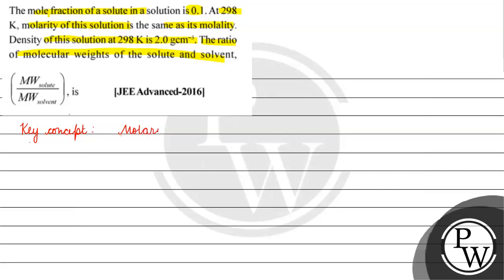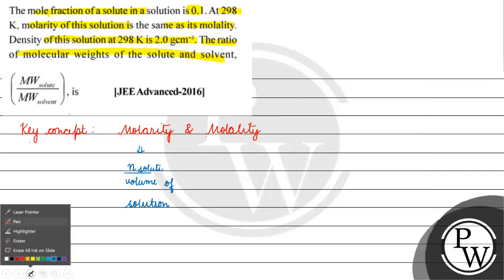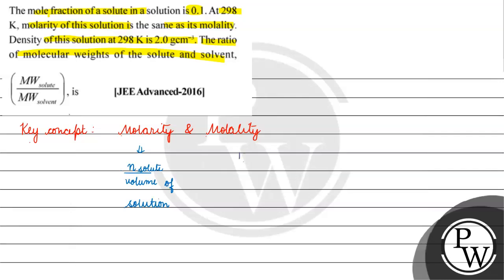We will talk about molality and molarity. Molarity is number of moles of solute by volume of solution. And molality is basically equal to number of moles of solute by mass of solvent in kilograms.